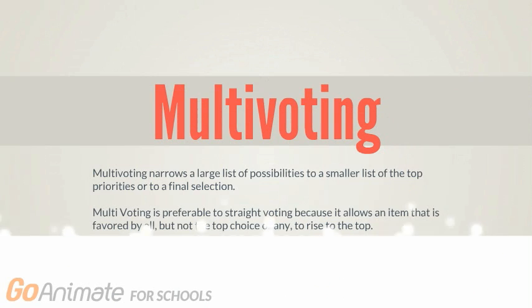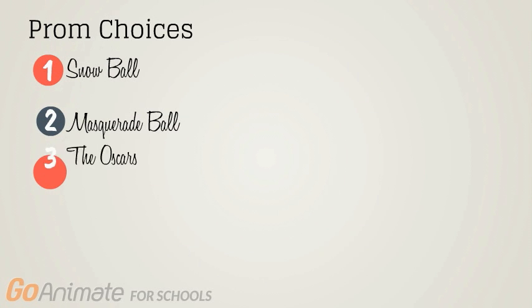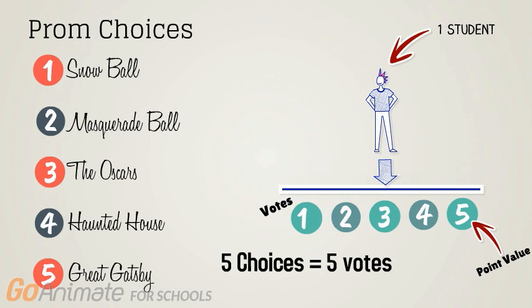Now let's move on to multi-voting. Multi-voting narrows a large list of possibilities to a smaller list of the top priorities or to a final selection. Multi-voting is preferable to straight voting because it allows an item that is favored by all but not the top choice of any to rise to the top. The prom committee has five choices, and each of the students has five votes.